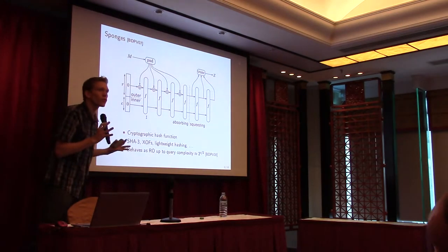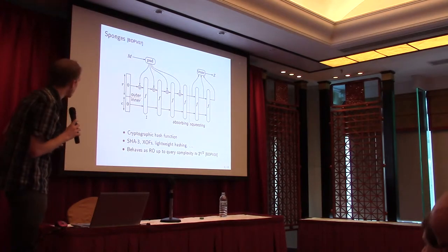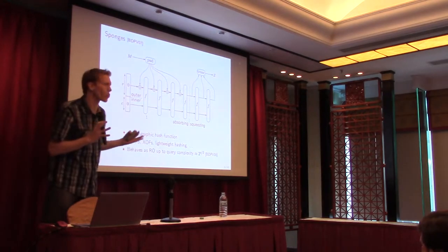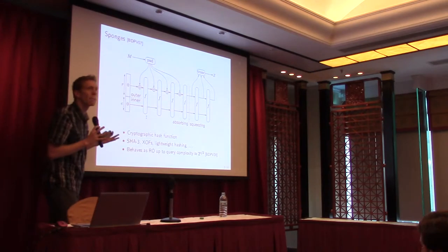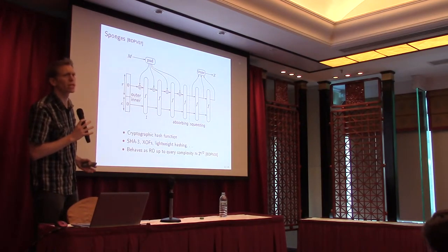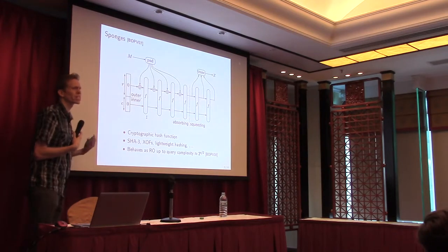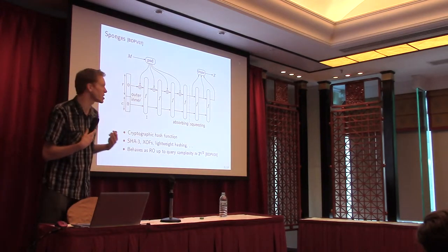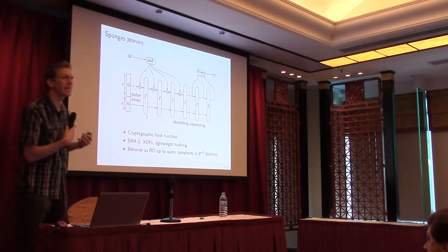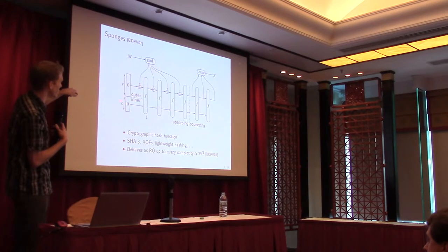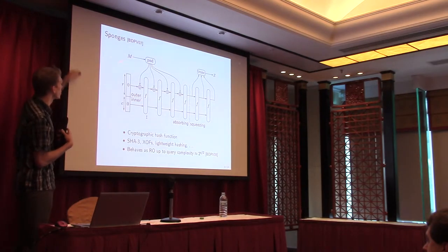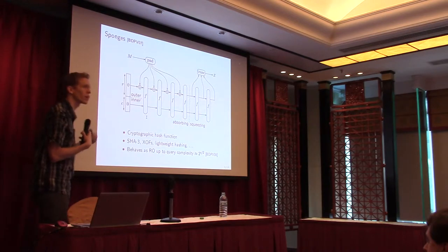The sponge function is a popular design of a hash function, introduced by Barth Manning et al. in 2006-2007. It has been used for SHA-3, extendable output functions, and many lightweight hash functions. It is particularly popular due to its conceptual design. In the original hash functions you use a block cipher in a certain mode of operation, but with the sponge you just use a single permutation over a large state. The state is split into an inner part of C bits and an outer part of R bits. The message is padded and then absorbed into the outer part, interlaced with evaluations of the permutation.